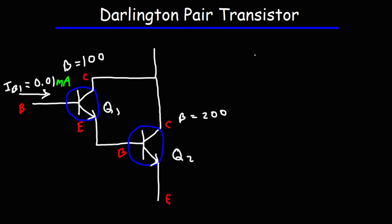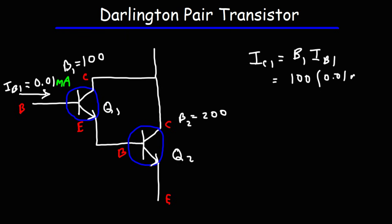To calculate the collector current going into transistor 1, it's going to be the DC beta of Q1 times the base current. Beta 1 is 100, so this is going to be 100 times 0.01 milliamps. So the collector current IC1 is going to be 1 milliamp — 100 times larger than the base current.